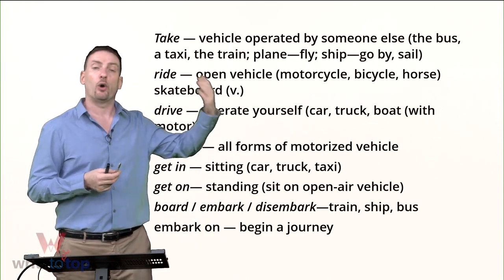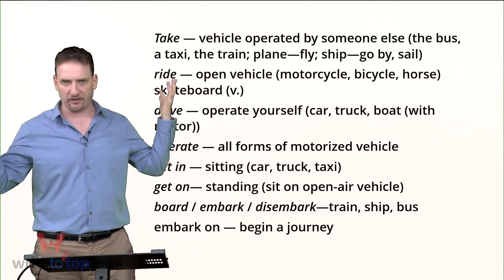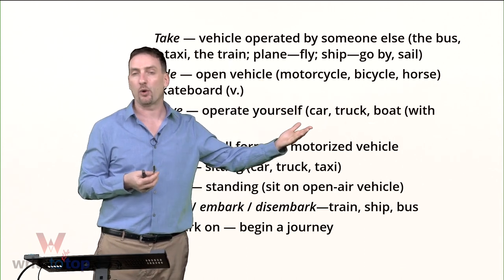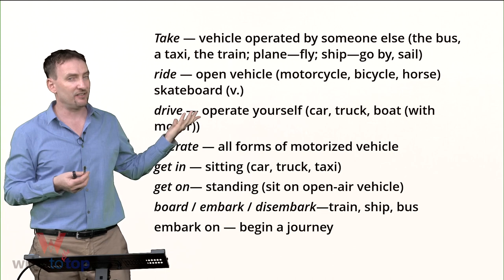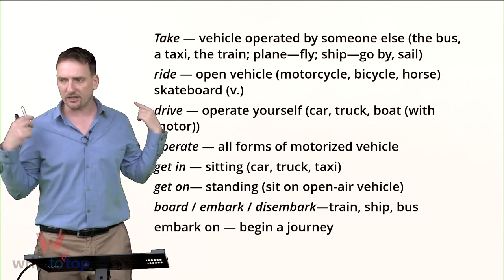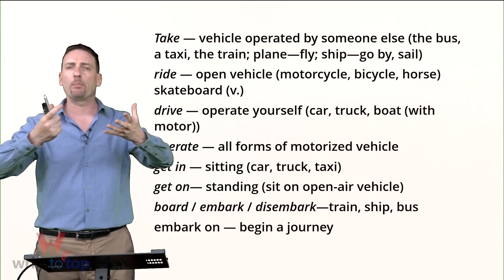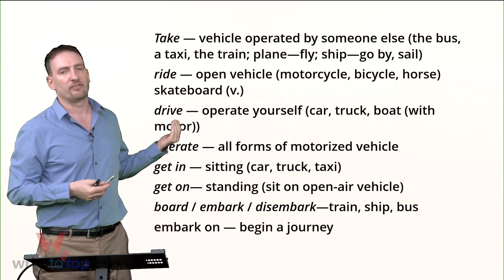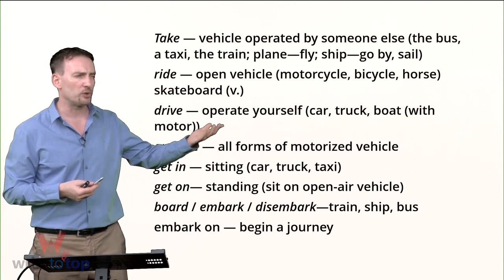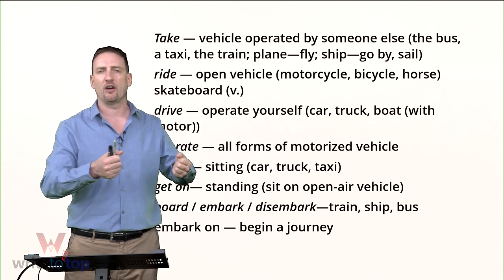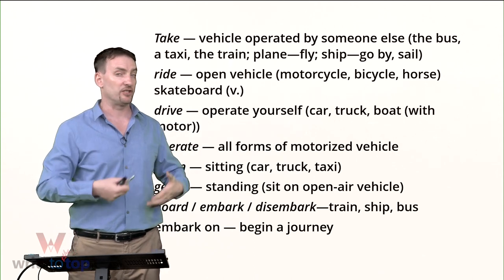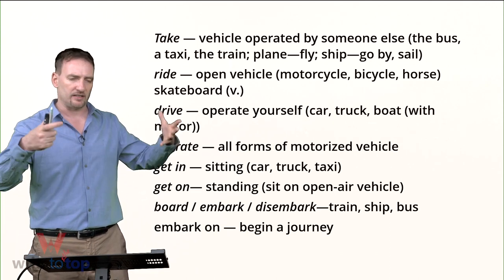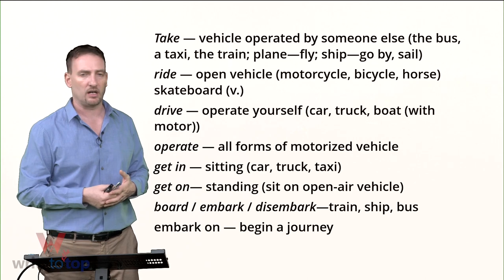Ride. You ride in an open vehicle — open means there's nothing around you, like you're just generally sitting or standing. You ride a motorcycle, a bicycle, a horse. You don't have to be sitting — you could be standing, like you ride a skateboard. Essentially there's nothing around you; you're in open air on some sort of vehicle. Drive. When you drive something, you're operating it yourself. We mostly use it with car, truck, and boat — things that have an engine or a motor. If you're not sure, you can say operate anything that has a motor or engine.